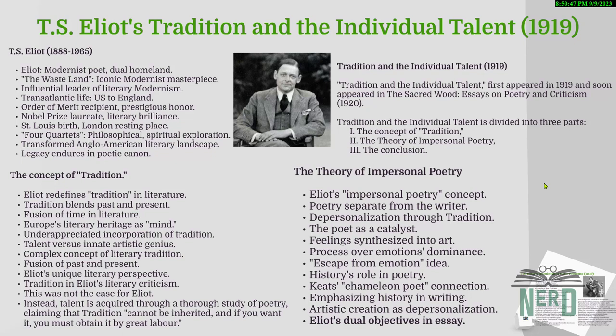Eliot's influence wasn't limited to just poetry — it seeped into Anglo-American culture. In recognition of his literary prowess, he received some of the highest honors, including the Order of Merit and, of course, the Nobel Prize for Literature. Now let's talk about one of his famous essays — Tradition and the Individual Talent. Remember that this was published in The Sacred Wood: Essays on Poetry and Criticism in 1920. In a nutshell, Tradition and Individual Talent is divided into three parts: first, the concept of tradition; then the theory of impersonal poetry; and finally, a conclusion.